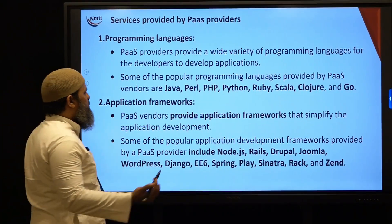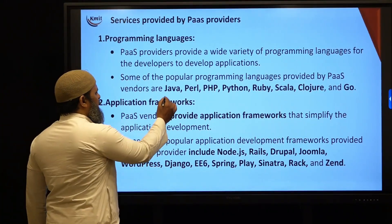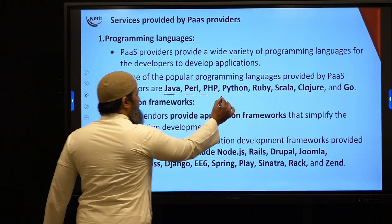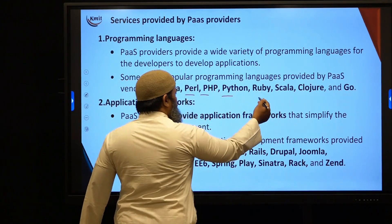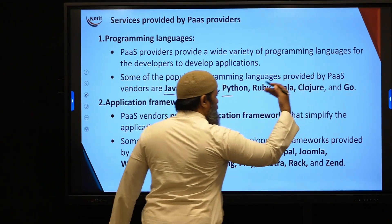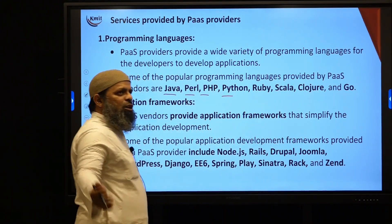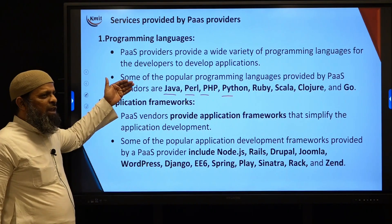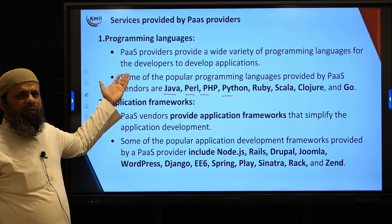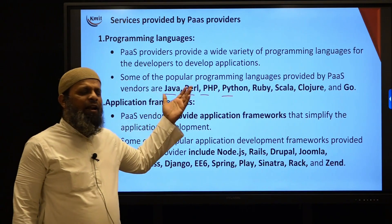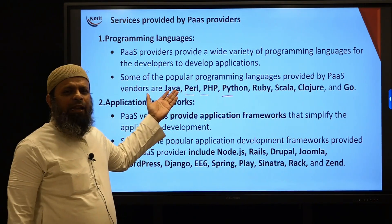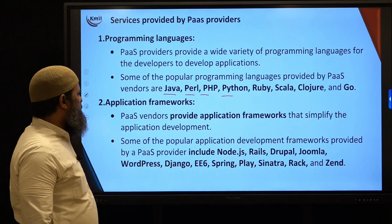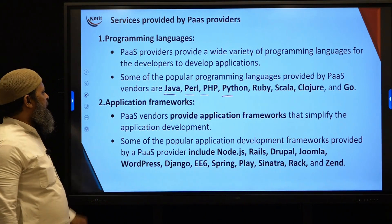The programming languages supported generally include Java, Perl, PHP, Python, Ruby, Scala, Clojure and Go. Many more languages are continually added so that any type of application can be developed using PaaS services.